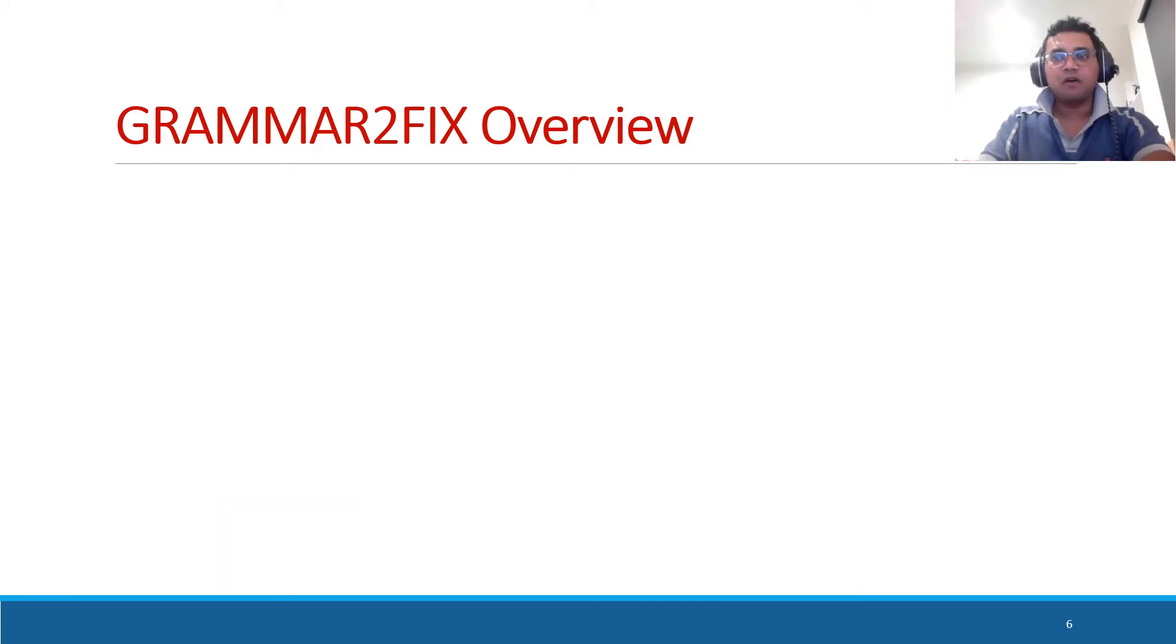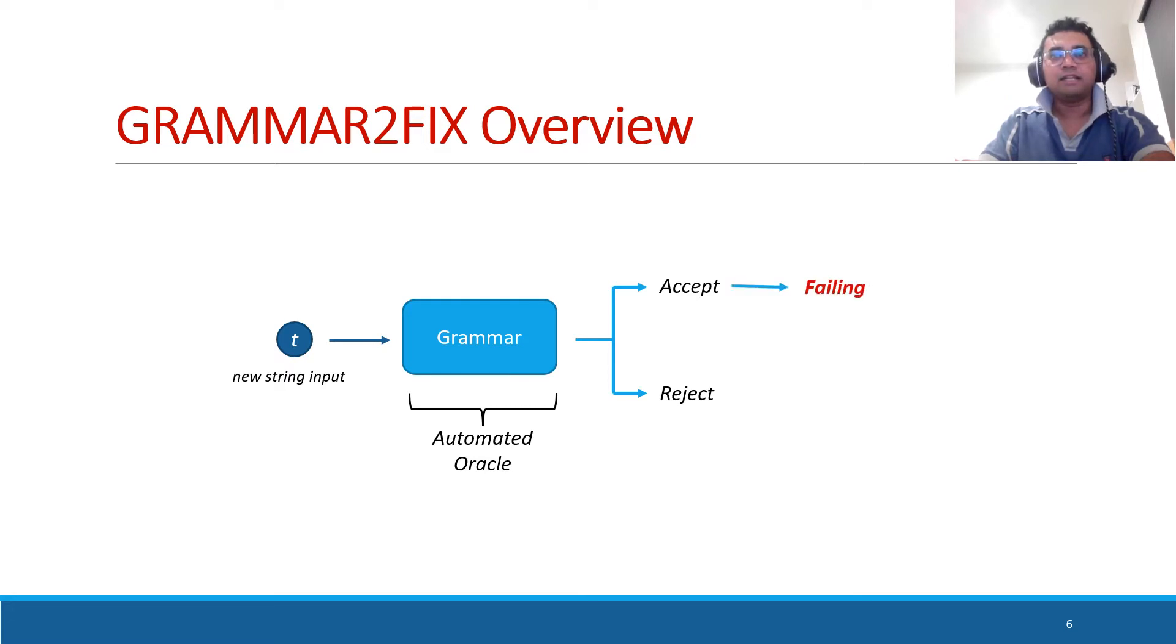Now, I would like to describe how this grammar works as a test oracle. Assume that a new string input has been given and the grammar is there. If the grammar accepts that string input, it is predicted as failing. Otherwise, it is passing.